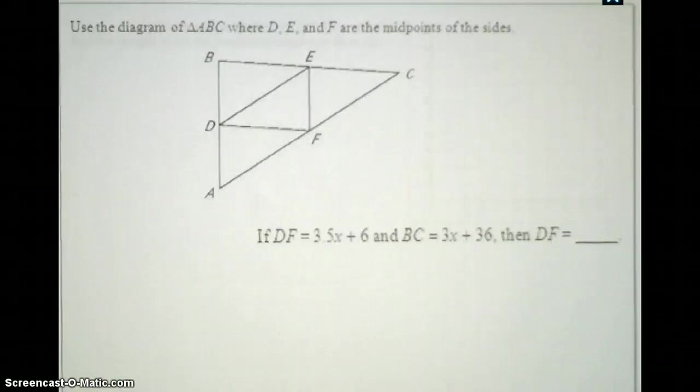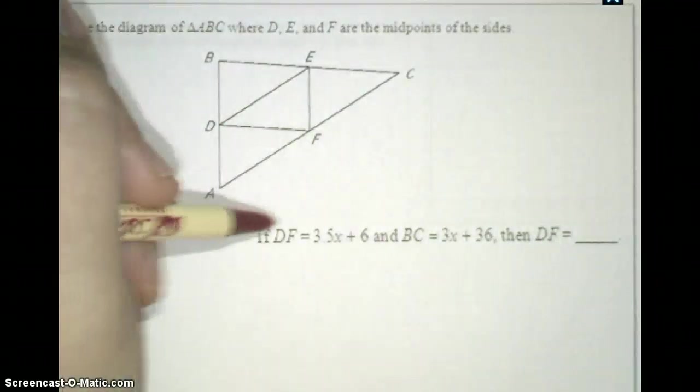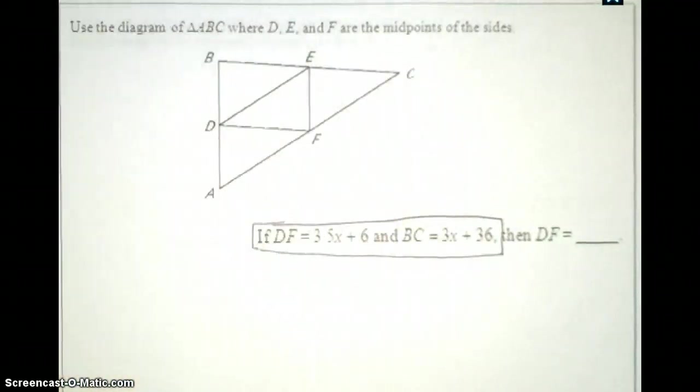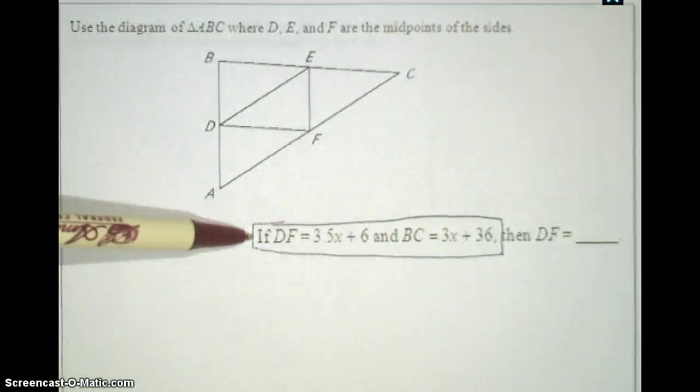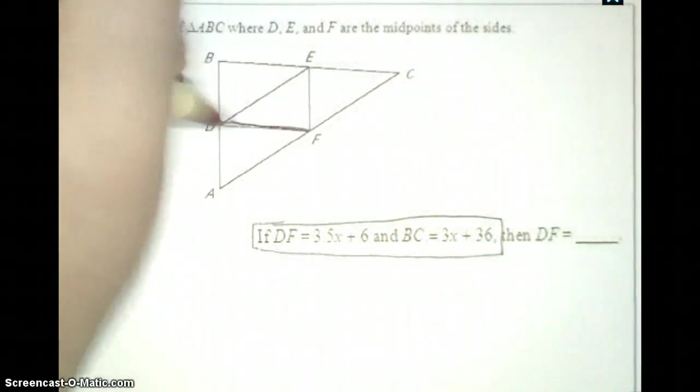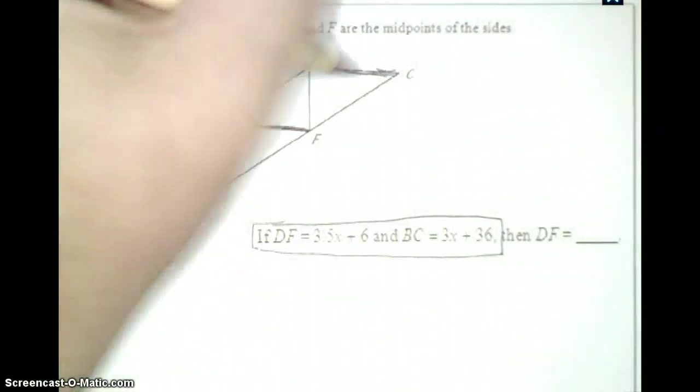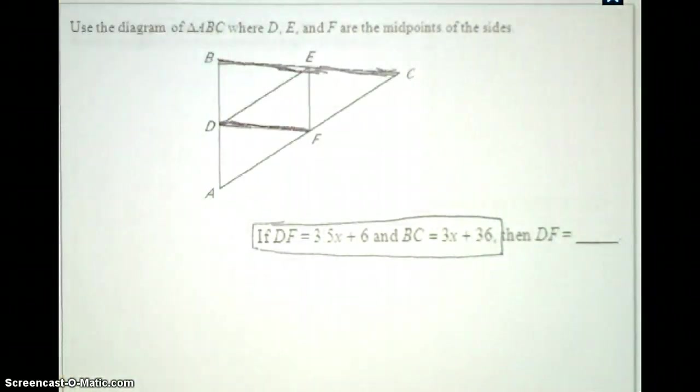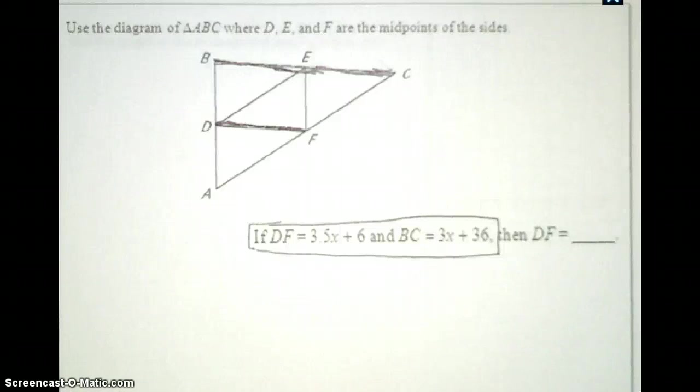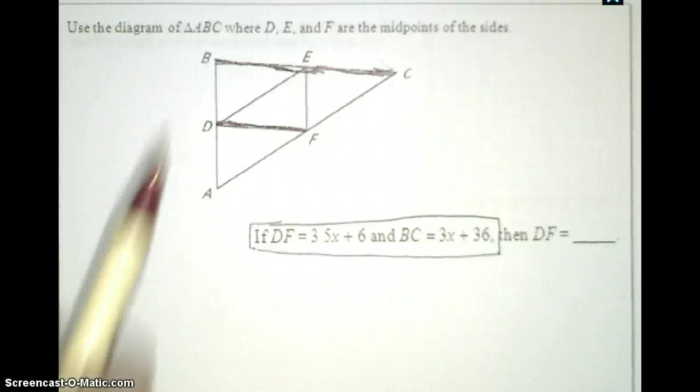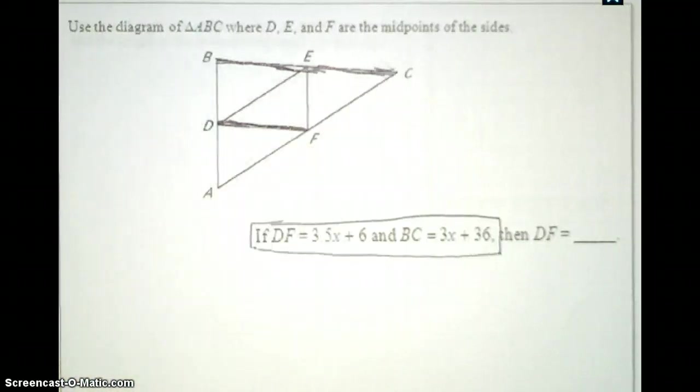Take a look at this last problem. Again, pause the video, try to complete the problem yourself, and when you're ready, press play for the solution. This gives you more information than you need, so you want to focus on exactly what information I give you here and use just that only to solve your problem. They're telling you that the length of DF is 3.5x + 6. They also tell you that the length of BC is going to be 3x + 36. Again, since angles aren't used, you're not going to use the parallel portion of the midsegment theorem to help you solve this problem.